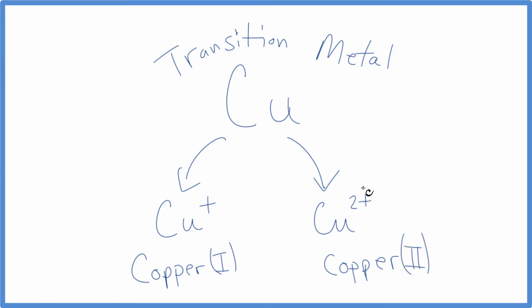Note that when we're writing ionic charge, we put the sign after the number, so we have 1+ and 2+ here. So how did we get from copper to this positive ion?